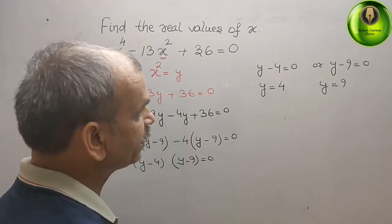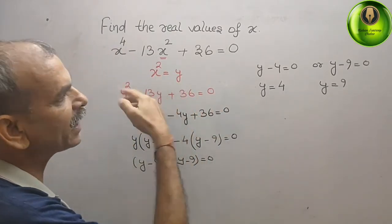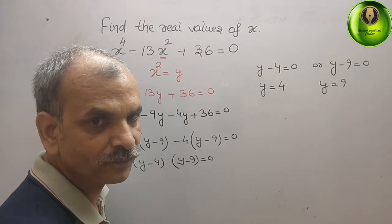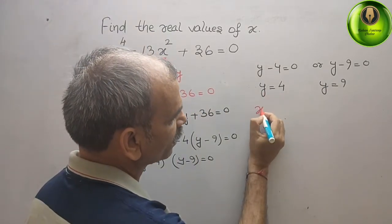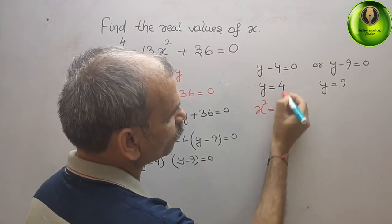But we know that what is our y? y is x square. So here we will write instead of y: x square. x square is equal to 4.